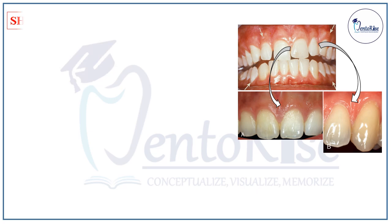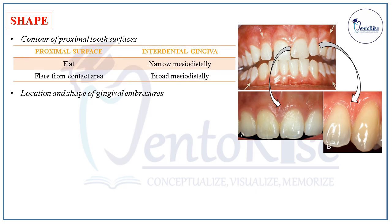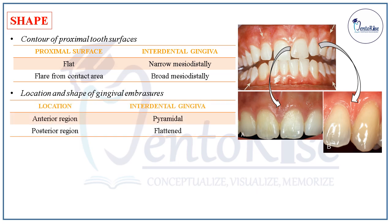The shape of the normal gingiva is dependent upon the contour of proximal tooth surfaces and the location and shape of gingival embrasures. For example, if the proximal surface is flat, then the interdental gingiva is narrow mesiodistally. However, if it flares from the contact area, then it is broad mesiodistally. In the anterior region, the interdental gingiva is pyramidal, and in the posterior region, the interdental gingiva is flattened.